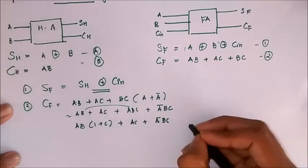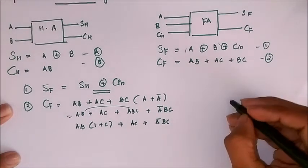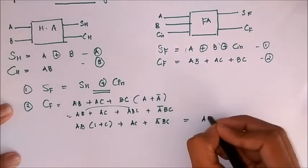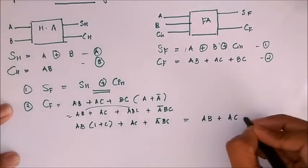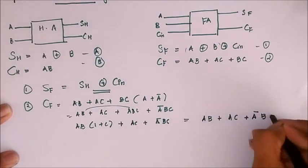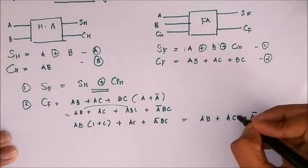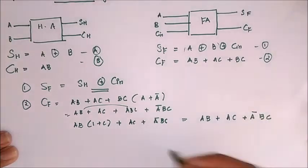We have AB into 1 plus C plus AC plus A bar BC. As 1 plus any term is 1, that is 1 plus C is 1, we get AB plus AC plus A bar BC.